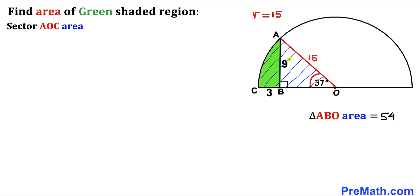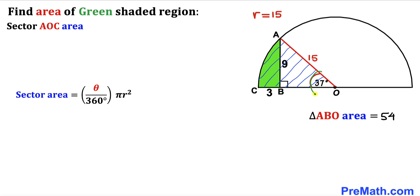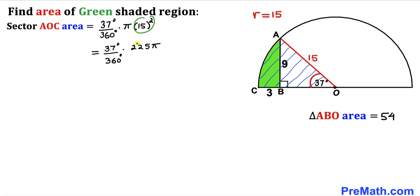Let's calculate the area of sector AOC using the formula: area equals theta over 360 degrees times pi r squared. With theta equal to 37 degrees and radius equal to 15, the sector area becomes 37/360 times pi times 225, which simplifies to 185π divided by 8.